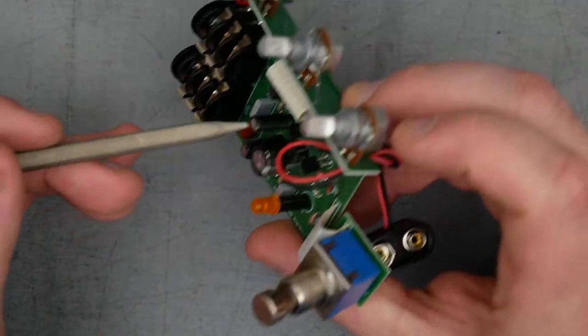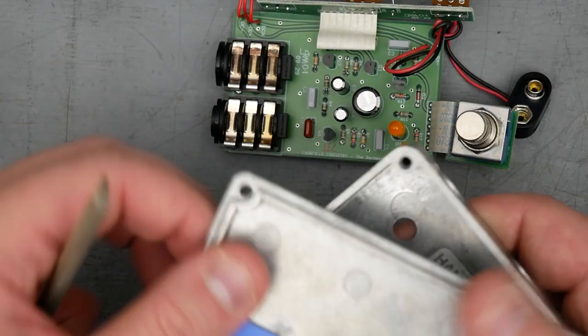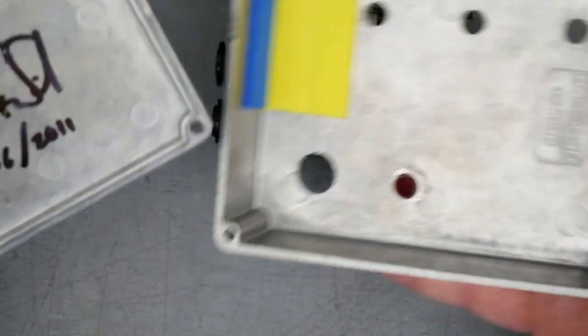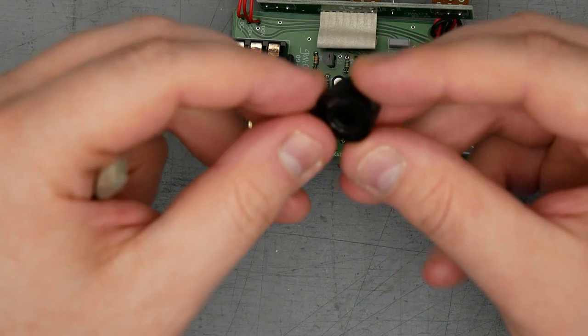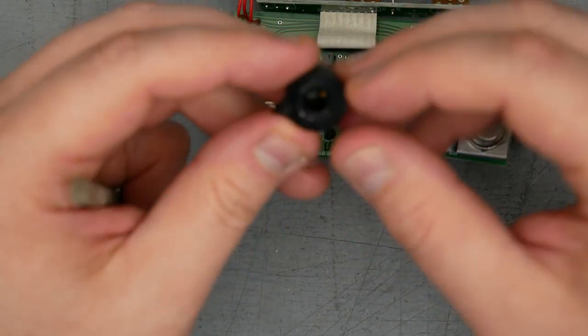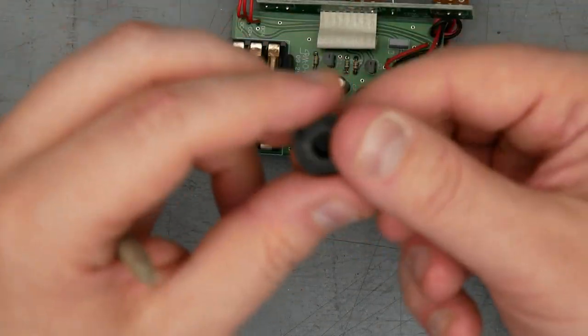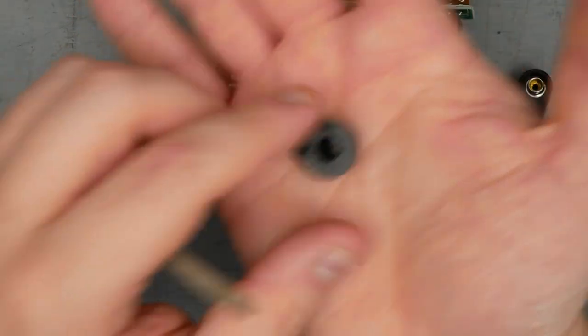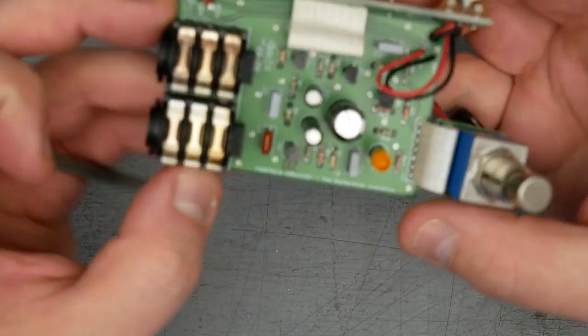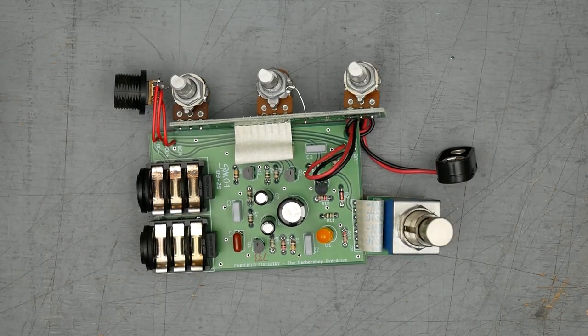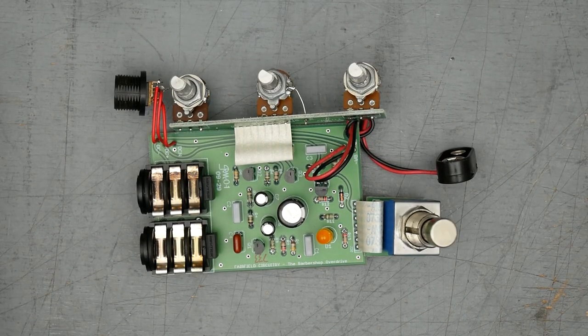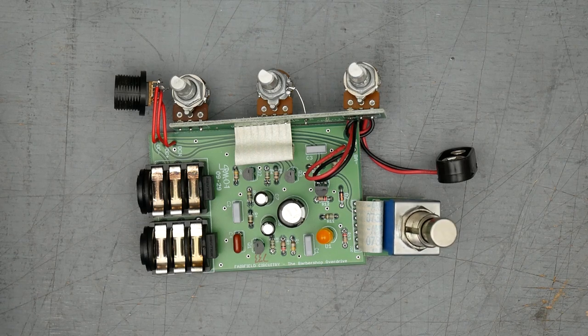The enclosure here is Hammond. It's got a couple pieces of foam just to keep the battery from rattling around. The knobs here, the 1400 style knobs are actually Davies branded knobs. So they splurge a little bit for the nice Davies brand knobs. And the board is marked Fairfield circuitry, the barbershop overdrive. So that is the inside of the Fairfield barbershop version one. Let's go ahead and put the pedal back together.